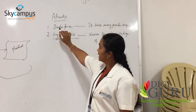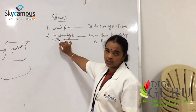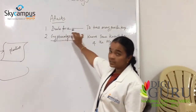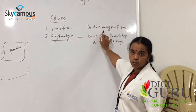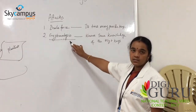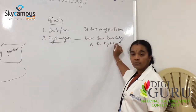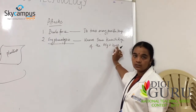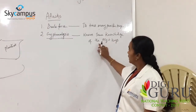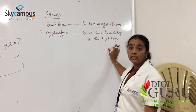We will be having two attacks: Brute Force attacks and Cryptanalysis attacks. In Brute Force attacks, it tries every possible key of the plaintext side. In Cryptanalysis attacks, the attacker might already know some knowledge of the algorithm as well as the key.